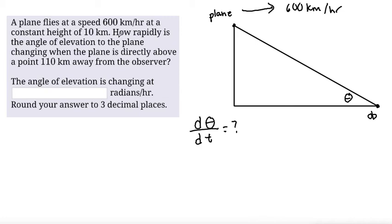We also know that the plane is at a constant height of 10 kilometers. So this side, the height of the plane from the ground would be 10 kilometers and we are looking for how rapidly it's changing when this side length is 110 kilometers away.